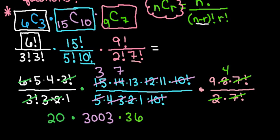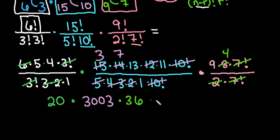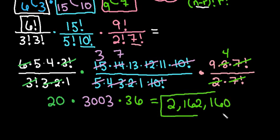And now instead of having to plug all of this into my calculator I can just plug in what I'm left with. And so we can just take 20 times 3003 times 36. And this ends up giving me 2,162,160 different combinations of the test.